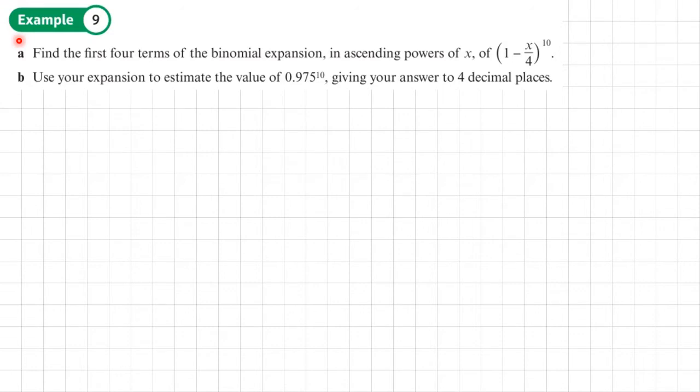OK, example nine. Find the first four terms of the binomial expansion in ascending powers of X of (1 - X/4)^10. So 1^10 will be the first term plus 10C1 times 1^9 times (-X/4)^1.